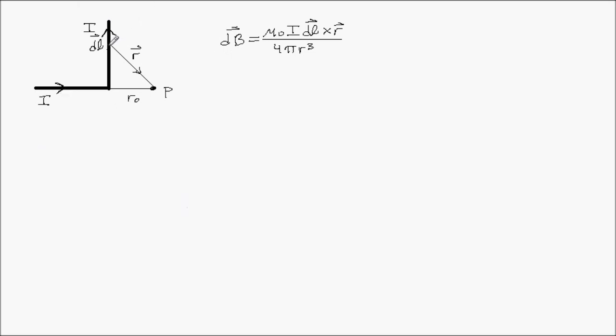r is from that little current element to point p. Think of dl a bit as if there were a point charge here as we did with Coulomb's Law, only you're going to add all these little dl's up. In this case, all the dl's are straight, but they don't have to be.